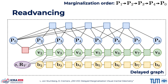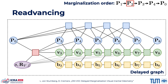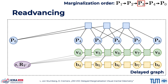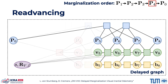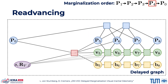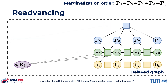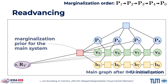Another advantage is that the graph can be re-advanced. This works by successively marginalizing variables according to the marginalization order, and the result is a marginalization prior for our main system. This transfers the covariances from IMU initialization to the main system in a meaningful way.